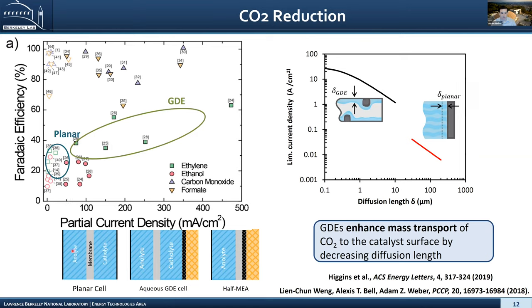If we go toward fuel cell-like systems — membrane electrode assemblies or gas diffusion electrodes — we can start pushing out the current density. The main reason is we're decreasing the transport loss of CO2 to the reaction site. Because CO2 is very insoluble in water, about 34 millimolar under standard conditions, if we decrease the diffusion length from the centimeter scale or 100 microns down to the nanometer scale, we can reach these higher current densities. These are all experimental data essentially showing that behavior.